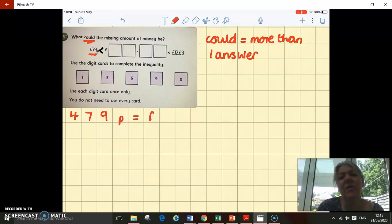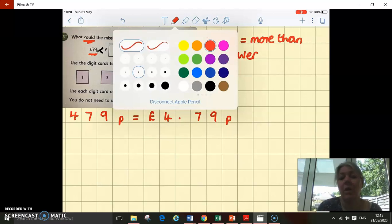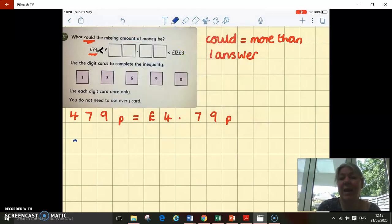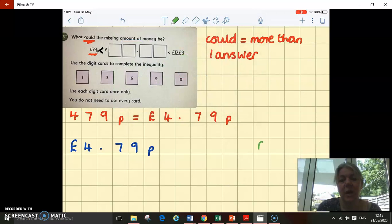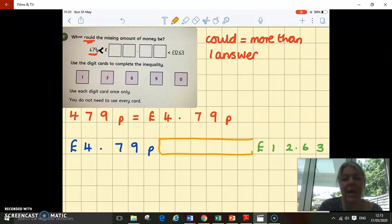I can see the other value is pounds, so I'm going to convert 479 pence to pounds: £4.79. So they're both the same. You could equally convert your pounds into pence. And now I can see I've got £4.79 and I've got £12.63. But I've got to find an amount that is less than £12.63 and more than £4.79.